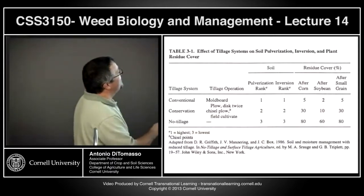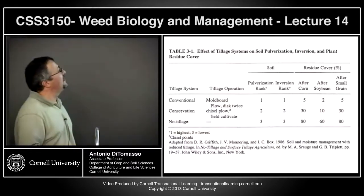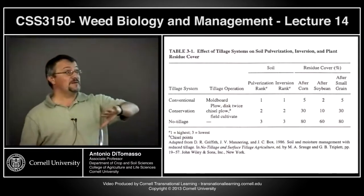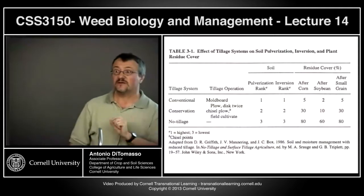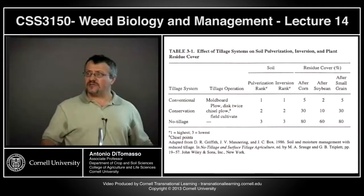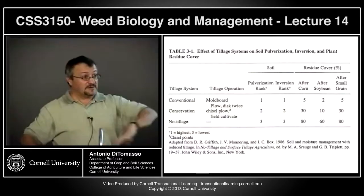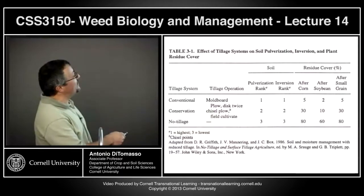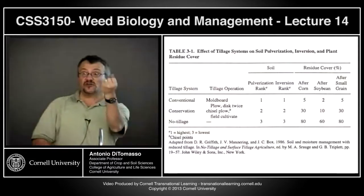In a conventional system you have a moldboard plow - that implement that inverts the soil completely - leaving very little residue, usually five to ten percent. Conservation tillage uses a chisel plow, which tears into the soil leaving more residue, usually 35 to 50 percent. No-till just makes a small slit to plant with very little disturbance.